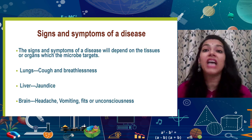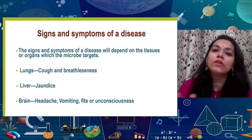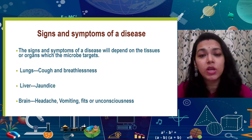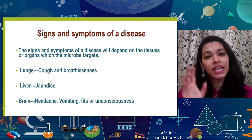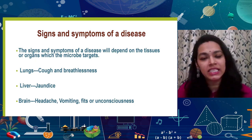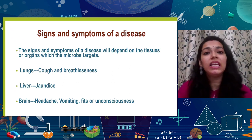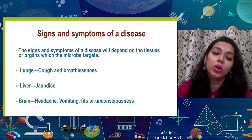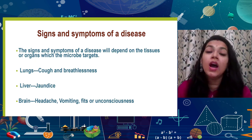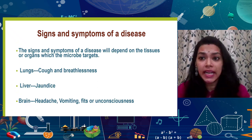There are specific sites where microorganisms start replicating to cause disease. In terms of signs and symptoms: if the site of multiplication is the lungs, we see symptoms like coughing and breathlessness, because the lungs are directly involved in respiration. Common cold, influenza, pneumonia, and COVID-19 all produce these symptoms because the infection site is the lungs. If the infection site is the liver, we see signs like jaundice — the skin becomes pale or yellowish in colour — again reflecting the affected organ. If the infection site is the brain, we see symptoms like headache, vomiting, and unconsciousness.